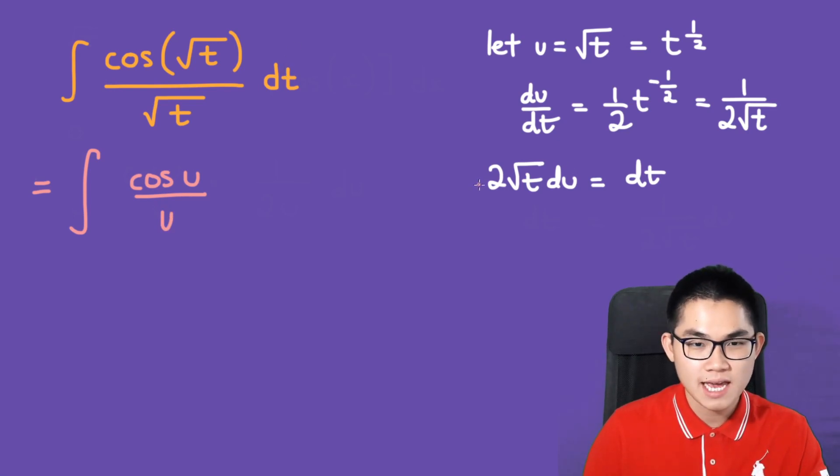Well, dt is 2√t du. And notice that we also have another square root of t here, which we can turn into u.